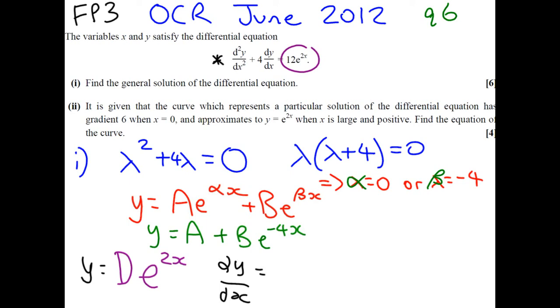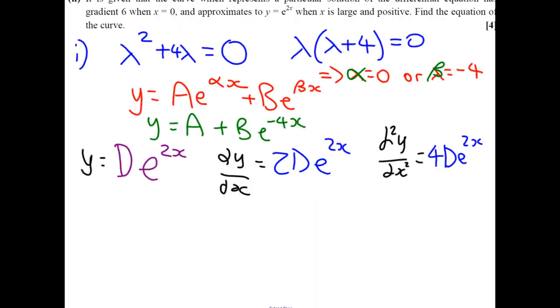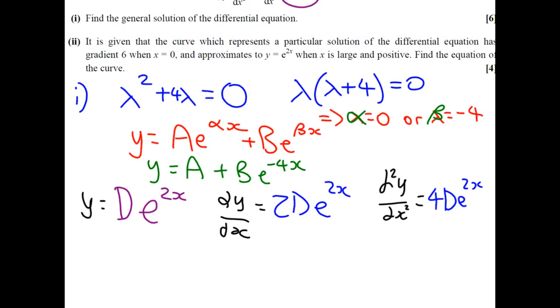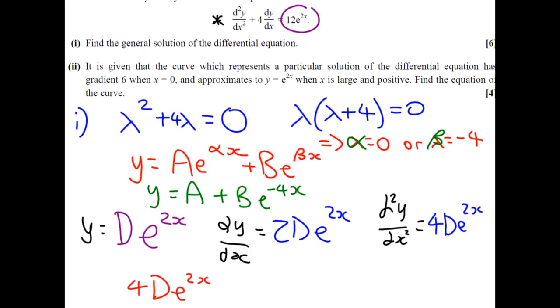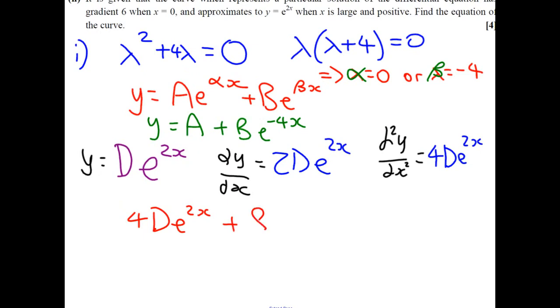So, dy/dx, differentiating gives us 2De to the 2x. And differentiating again, d²y/dx² gives us 4De to the 2x. So, let's substitute our values in to the differential equation. We've got d²y/dx², 4De to the 2x. And we've got 4dy/dx, which gives us 8De to the 2x. And this equals 12e to the 2x.